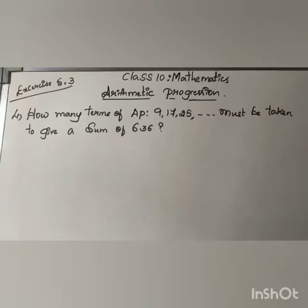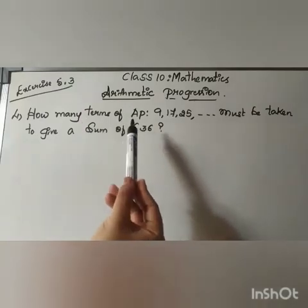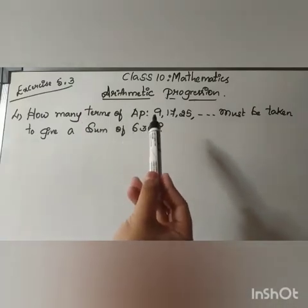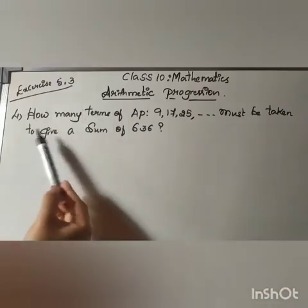Hello children, so today under exercise 5.3 let us continue the remaining questions. The fourth question is: how many terms of an AP, that is a given arithmetic progression 9, 17, 25, must be taken to give a sum of 636?